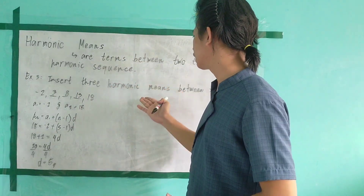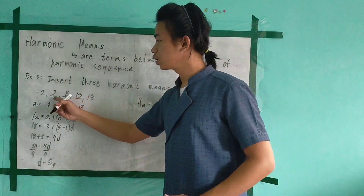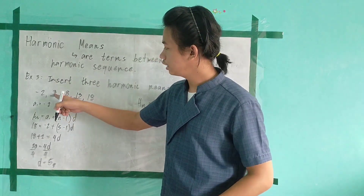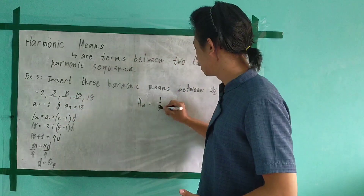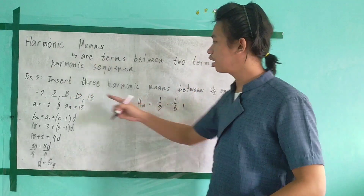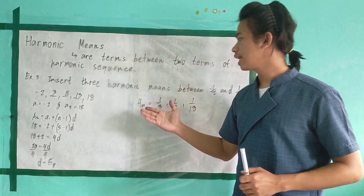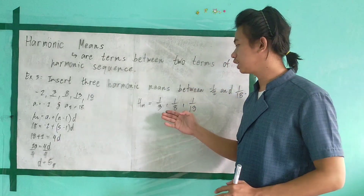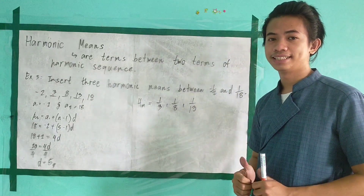Since we are looking for the 3 harmonic means, we take the reciprocals of our arithmetic means. Reciprocal of 3 is 1 third. Reciprocal of 8 is 1 over 8. Reciprocal of 13 is 1 over 13. Therefore, the 3 harmonic means between negative 1 half and 1 over 18 are 1 third, 1 eighth, and 1 over 13.